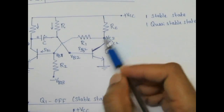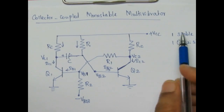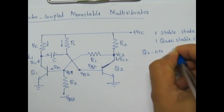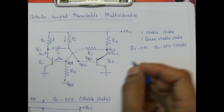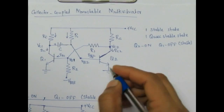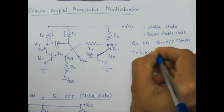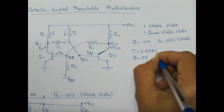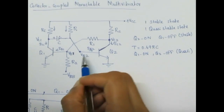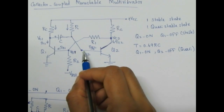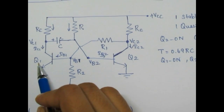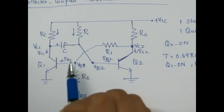When we give the DC supply VCC and minus VBB through resistors, the circuit will enter into stable state. As per the circuit diagram, the stable state condition is Q2 is on and Q1 is off. When we give a trigger pulse, it will enter into quasi-stable state and will remain in quasi-stable state for a time period T equal to 0.69RC. In quasi-stable state Q1 will be on and Q2 will be off. We give the trigger to Q2 transistor base. This state is called as quasi-stable state.